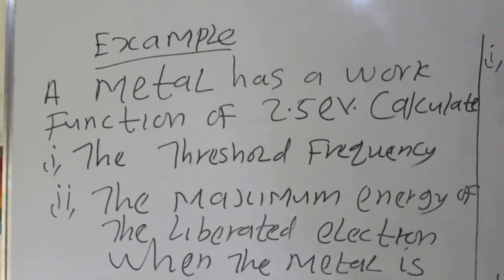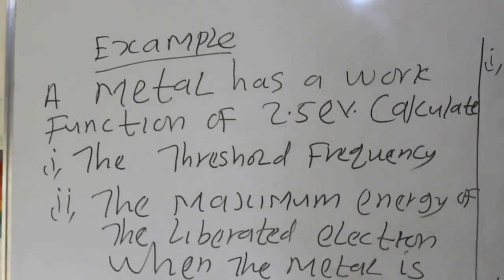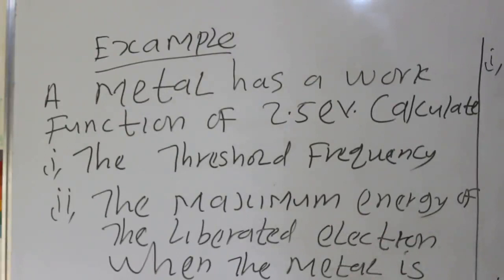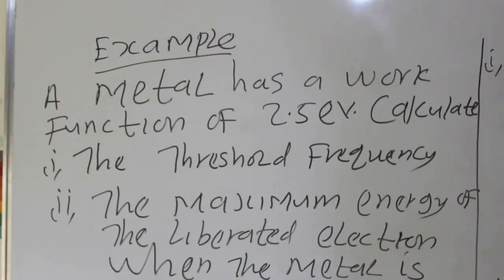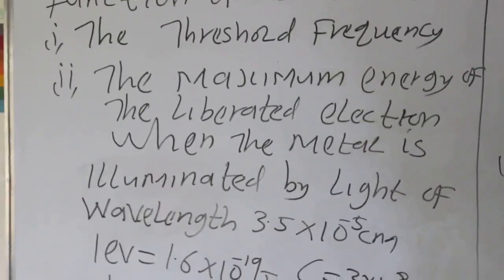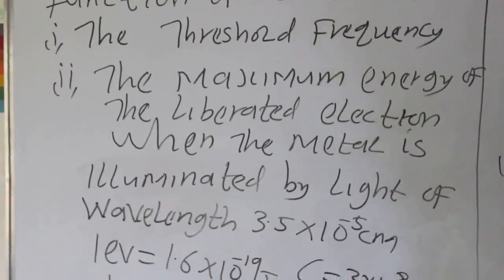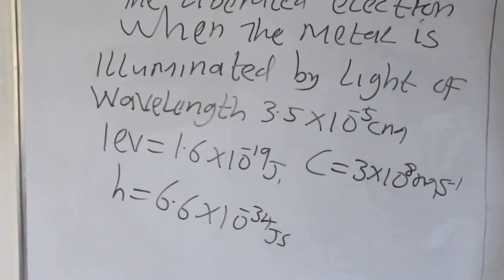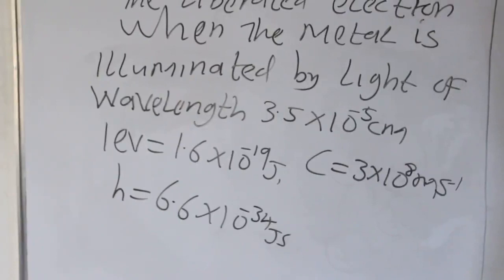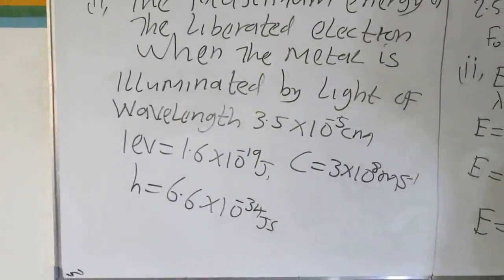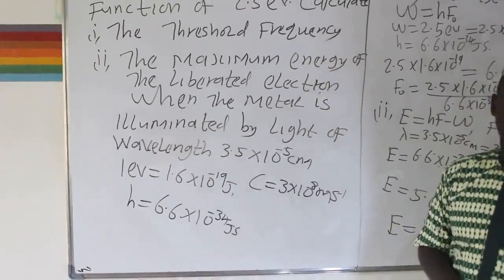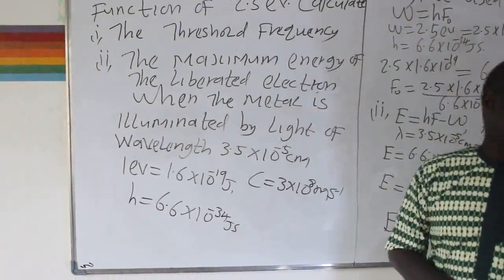Let's solve an example using this equation. A metal has a work function of 2.5 electron volts. Calculate: one, the threshold frequency; two, the maximum energy of the liberated electrons when the metal is illuminated by light of wavelength 3.5 × 10⁻⁵ centimeters. Given: 1 eV = 1.6 × 10⁻¹⁹ joules, speed of light c = 3 × 10⁸ m/s, and Planck constant h = 6.6 × 10⁻³⁴ joule-seconds.